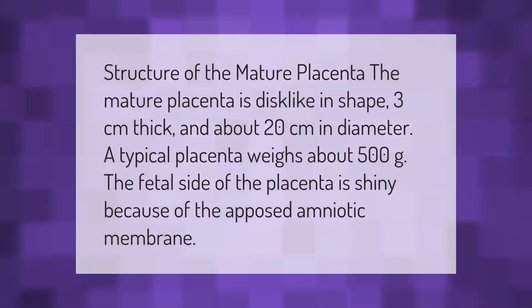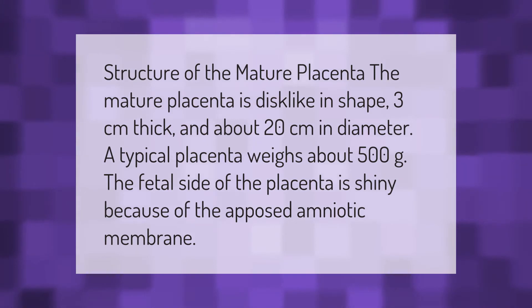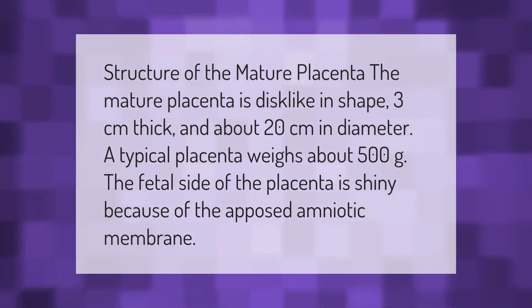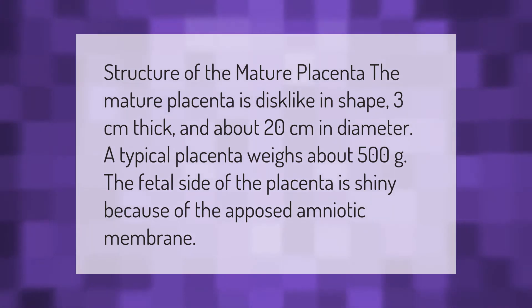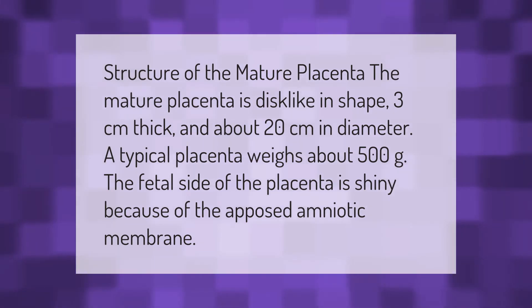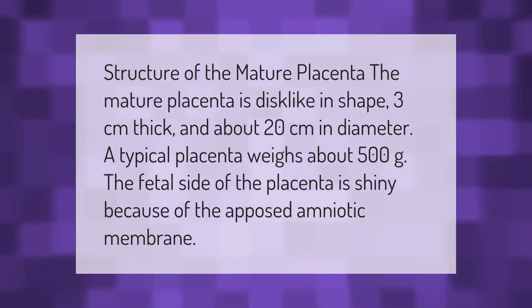Structure of the mature placenta: the mature placenta is disc-like in shape, three centimeters thick and about 20 centimeters in diameter. A typical placenta weighs about 500 grams. The fetal side of the placenta is shiny because of the opposed amniotic membrane.